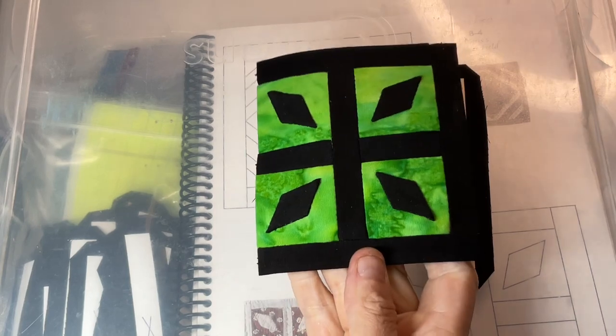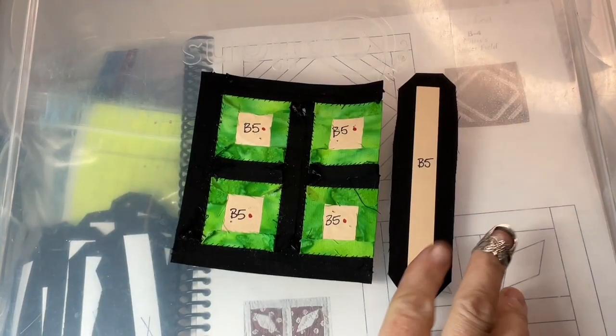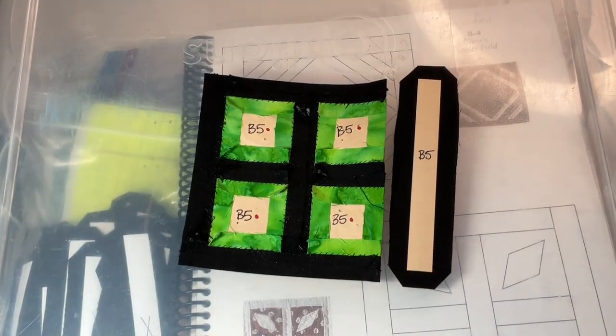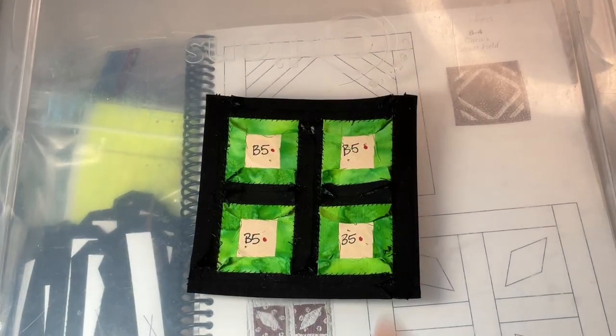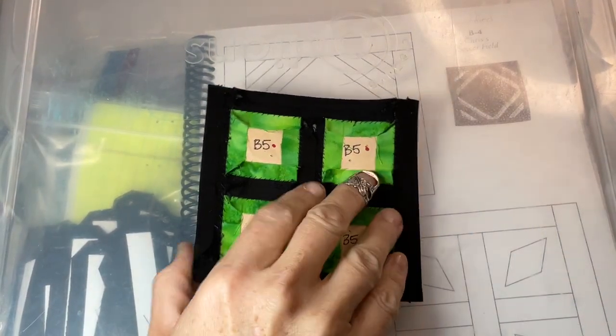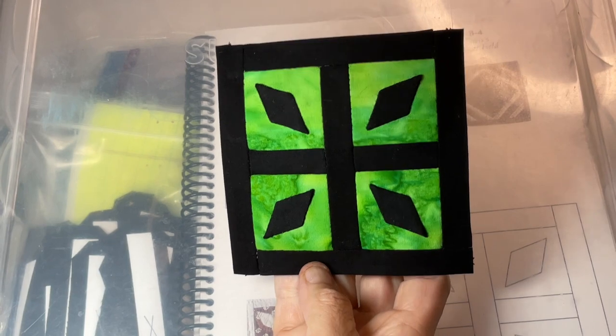So I've attached the bottom. Now the last step would be to attach this right side. So I've connected the last side, and now my B5 block has been completed.